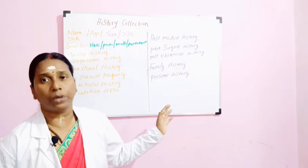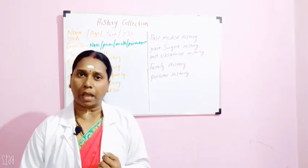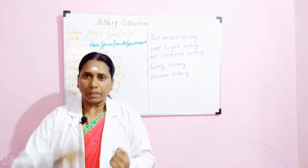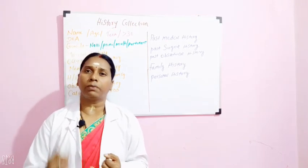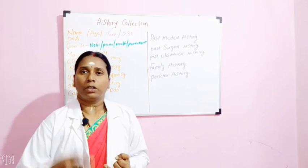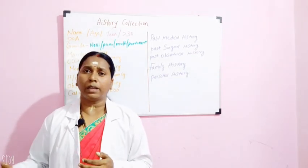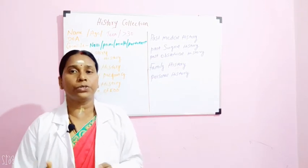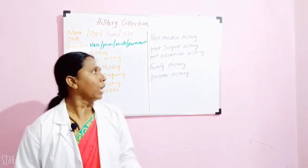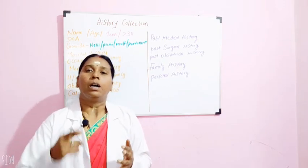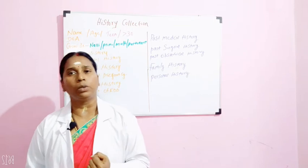Then personal history — here you are going to enquire about the habits and hobbies of the mother: how she takes care of herself, how are her health habits, whether she is having a healthy diet, whether she is concentrating on her present pregnancy, whether she has any bad habits of alcoholism or smoking. Smoking causes vasoconstriction and can cause abortion, intrauterine growth retardation, or IUD. You have to tell them to stop all these things if they are going to continue the present pregnancy. You will also enquire about sleep timings at night and in the daytime.